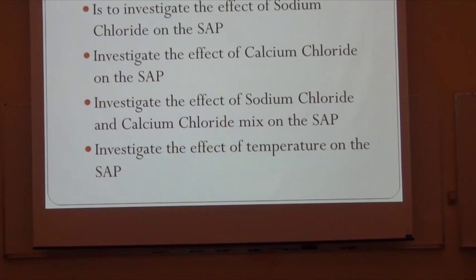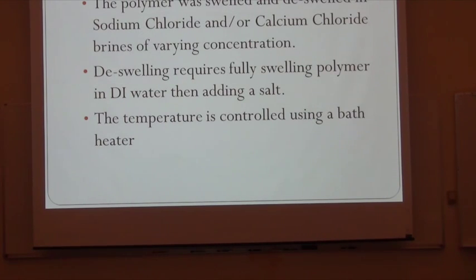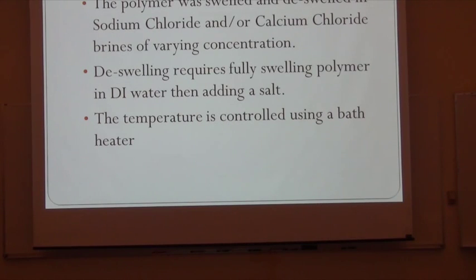I did swelling, de-swelling, and tested how the polymer reacts with temperature. For the swelling part, first I weighed the polymer according to the weight percentage based on the sample tube I chose. Then I put a certain amount of polymer into the test tube and added the brine — which is sodium chloride mixed with deionized water, or calcium chloride, or both. I mixed them really well and took data until it stopped swelling.